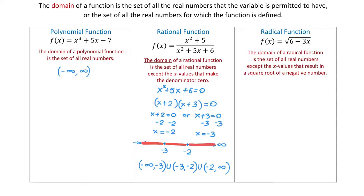Now let's talk about the domain of the radical function f of x equals the square root of 6 minus 3x. The domain of a radical function is the set of all real numbers except the x values that result in a square root of a negative number. Inside a square root we can have a positive number or 0, but we cannot have a negative number.